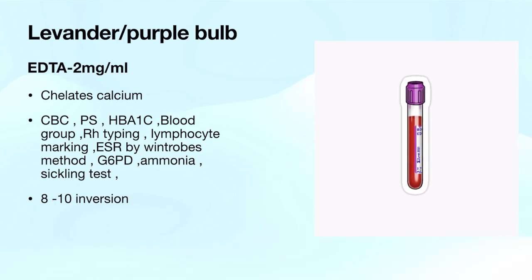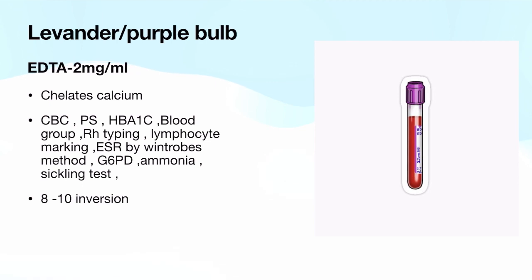The first tube is your lavender bulb. We have used this tube many times during internship and residency. This contains EDTA. EDTA chelates calcium. It is used for CBC, peripheral smear, HbA1C, blood grouping, cross matching, Rh typing, ESR by Winthrobe method, ammonia, and sickling test. It requires 8 to 10 inversions.